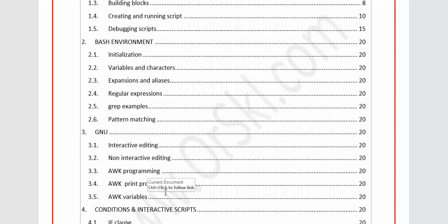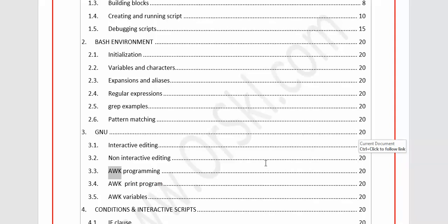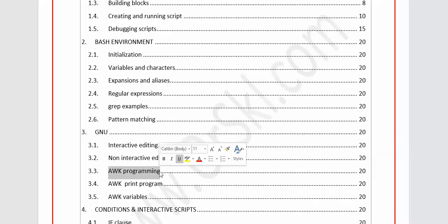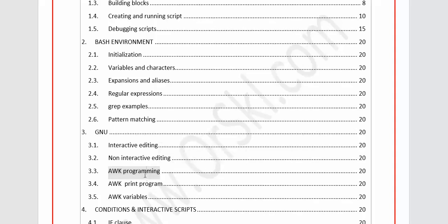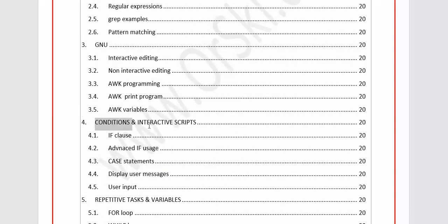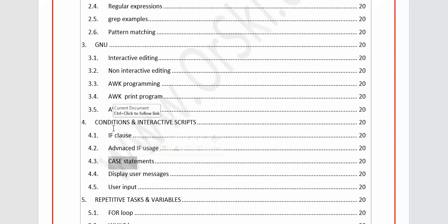The third topic will be about interactive editing between the user and the interface — that is, your script — and the different ways of doing it. AWK is another very important one. AWK is a way you can control many things inside a script. You could say AWK is something that is almost a different course in itself, that's how huge it is. AWK takes your commands into a different program, executes inside its program level, and then pulls out the output. Conditions and interactive scripts is where we'll see if clauses and case statements.